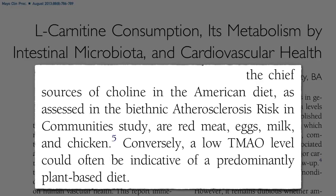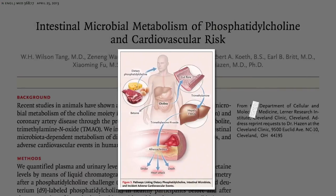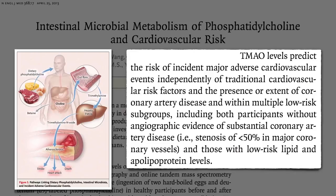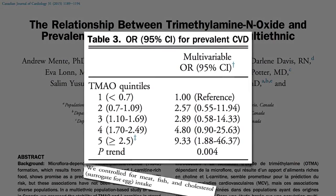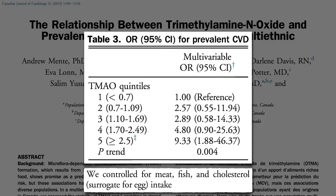Conversely, the reason a low TMAO level seems so protective may just be indicative of a more plant-based diet. One of the reasons we think TMAO is directly responsible is that TMAO levels predict the risk of heart attack, stroke, and death independently of other traditional cardiovascular risk factors — meaning whether or not you have high cholesterol, low cholesterol, high blood pressure or low blood pressure, having high TMAO levels appears to be bad news. This has since been replicated in other studies, with up to nine times the odds of heart disease at high TMAO blood levels, even after controlling for meat, fish, and cholesterol intake, which is a surrogate for egg intake.